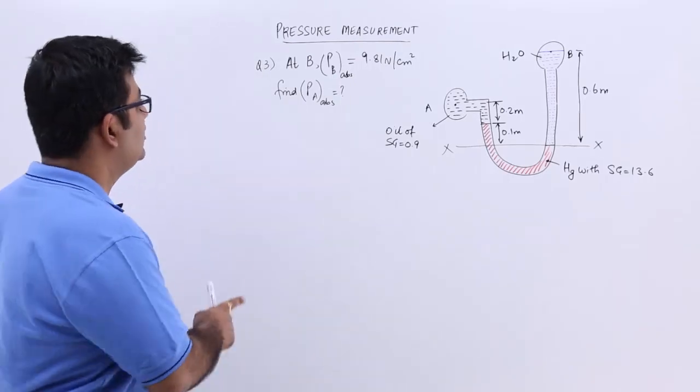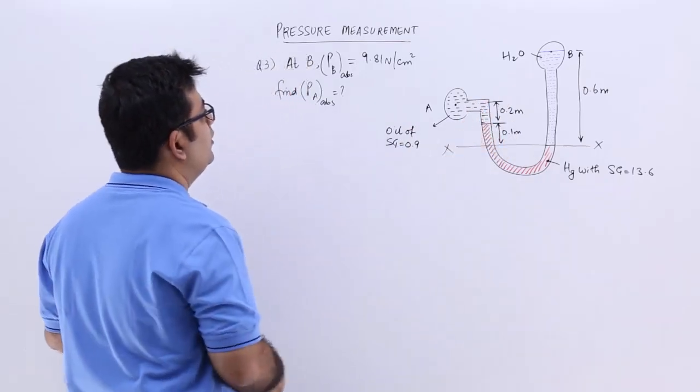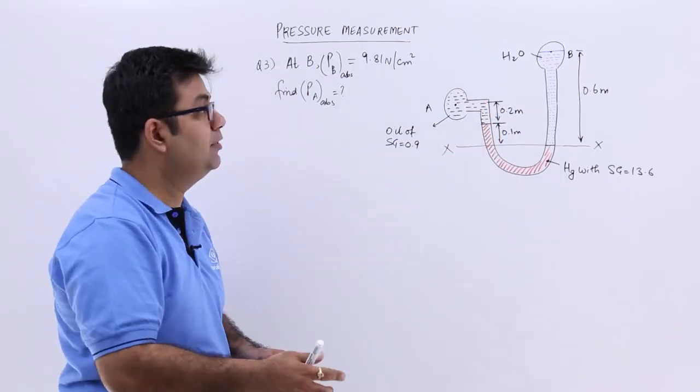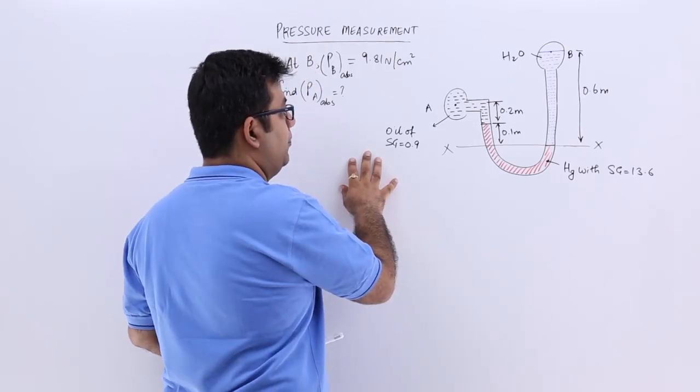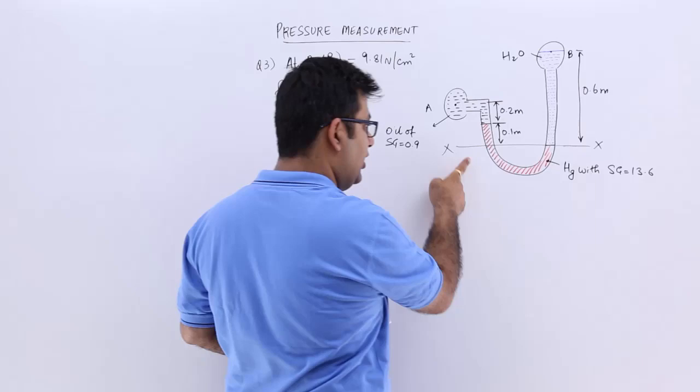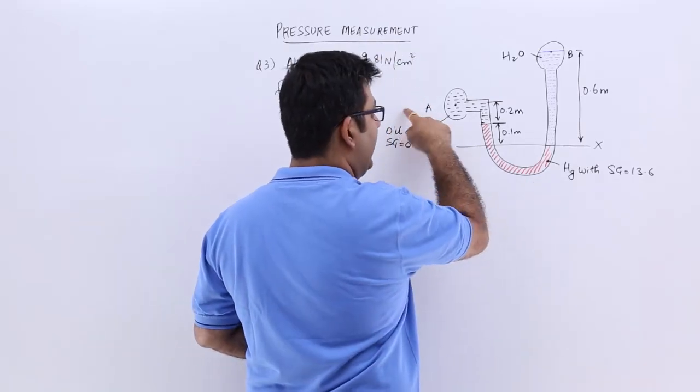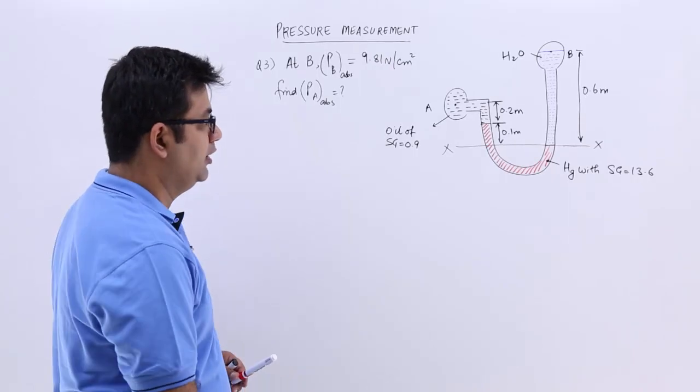Now let's talk about question number 3. Question number 3 says that you have a U-tube manometer which is of differential type. So you have oil of specific gravity 0.9 in the left limb and then you have mercury in between the oil and the water which is in the right limb.